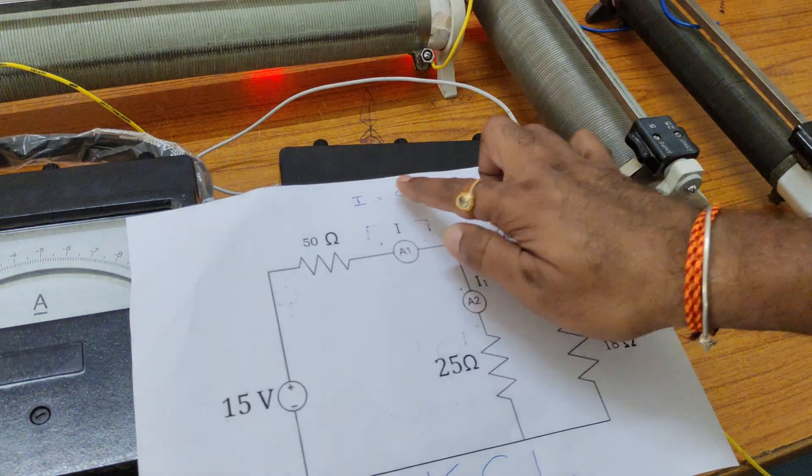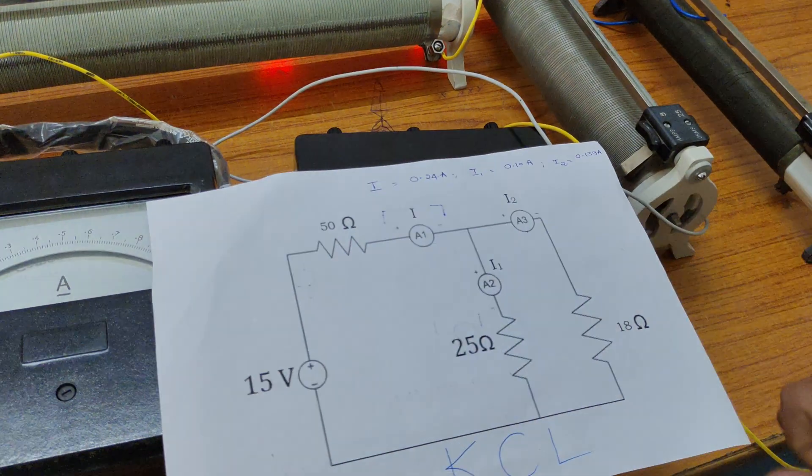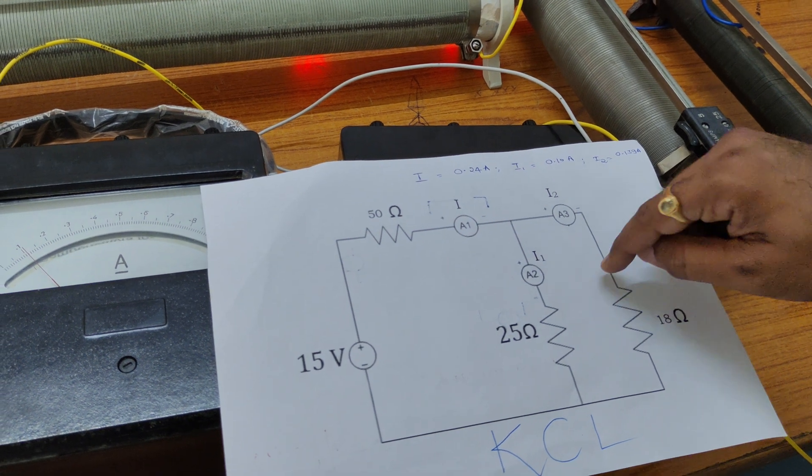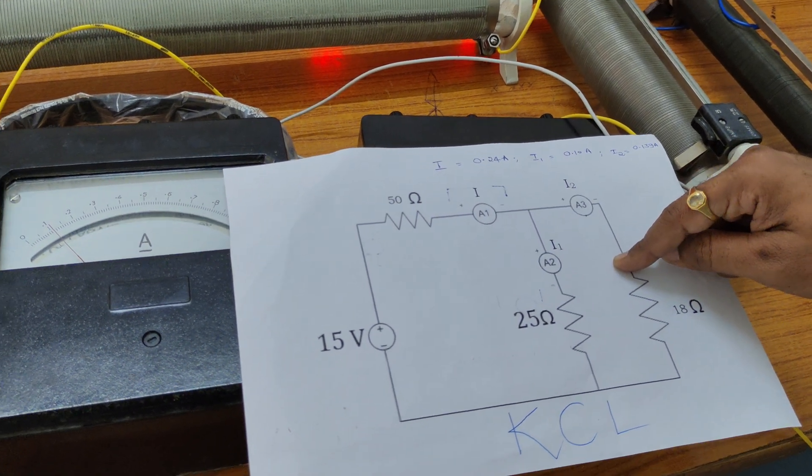The values we observed theoretically match the practical values we observed. This verification can be called KCL - that is, Kirchhoff's current law. Thank you.